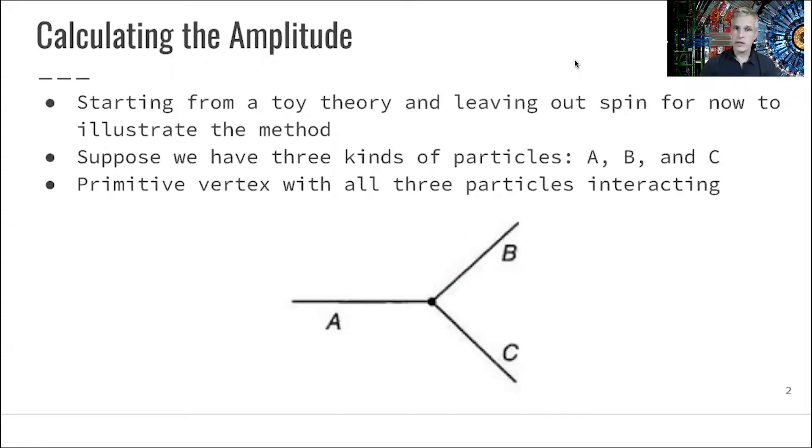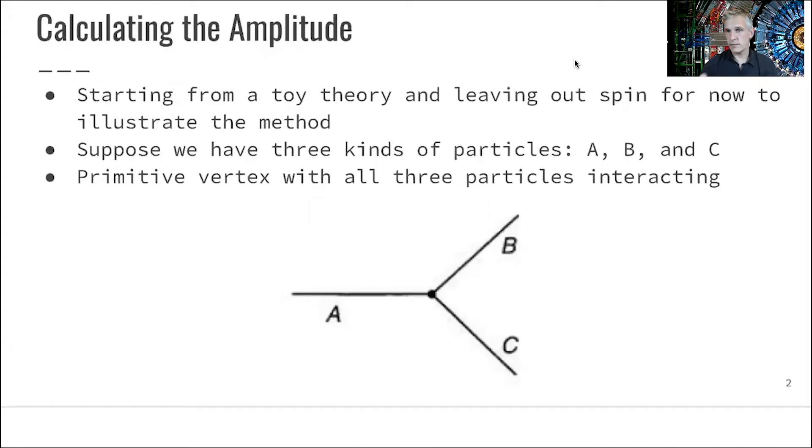So we're supposed to have three kinds of particles involved here, particle A, B, and C. And so we can have a primary vertex where these all three particles are interacting like shown here. So particle A might decay into particle B and C. You can assume that particle A is heavier than the sum of B and C. So this is kinematically allowed.